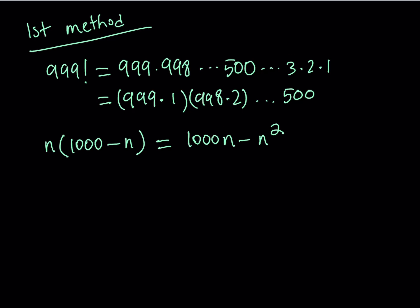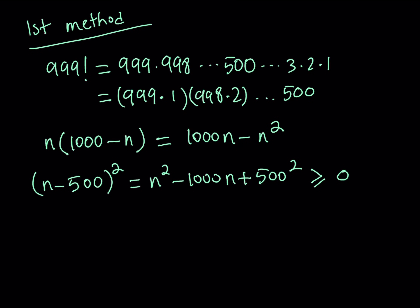So here's what I'd like to use. I want to get this expression. If you consider n minus 500 quantity squared, you're going to notice that you get n squared minus 1,000n plus 500 squared. It's better to keep it as 500 squared because we have 500 in our product. Obviously, this is going to be greater than or equal to 0.